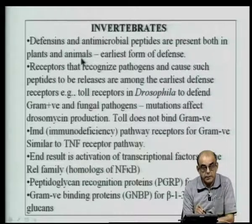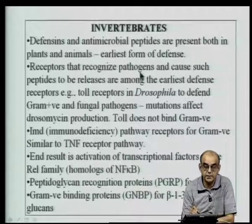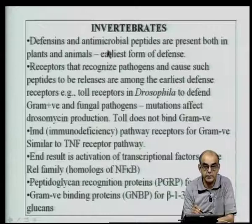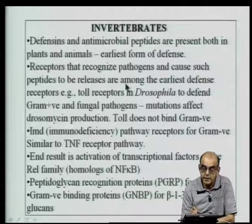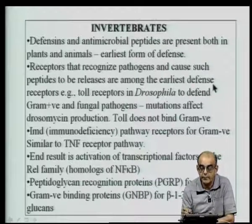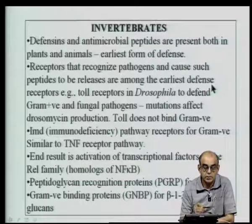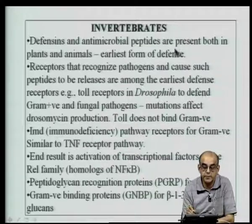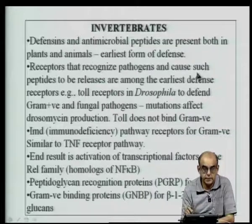Apart from proteins that evolved early on, receptors that recognize pathogens also evolved very early to defend organisms against infections. There is the presence not only of antibacterial peptides and proteins but also receptors that can recognize the incoming pathogen. These are present very early on, even in insects. For example, Toll receptors in Drosophila are used to defend against various kinds of infections such as gram-positive and fungal pathogens.